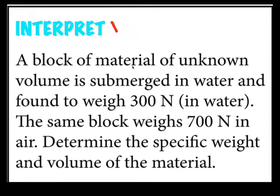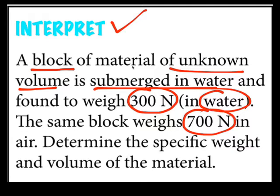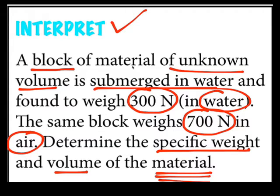I'll begin by interpreting the problem statement. This problem involves a block of material. The block has unknown volume. It's submerged in water, and the weight is 300 newtons in water and 700 newtons in air. The goals are the specific weight and the volume of the material which makes up the block.